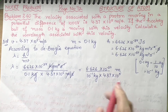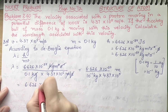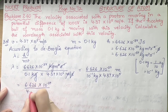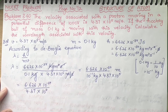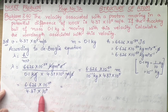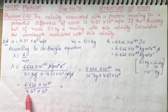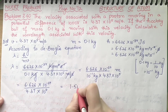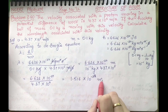So we have 6.626 into 10 raise to power minus 34 divided by 4.37 into 10 raise to power 4. In the numerator we have minus 34 and denominator has power 4, giving minus 38. Then 6.626 divided by 4.37 gives 1.516. So your final answer is lambda equal to 1.516 into 10 raise to power minus 38 meter.